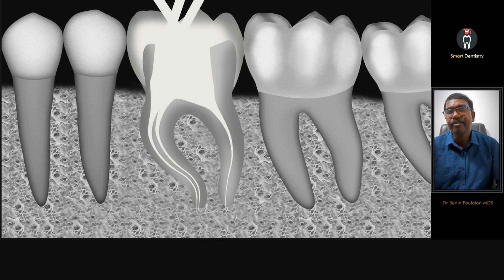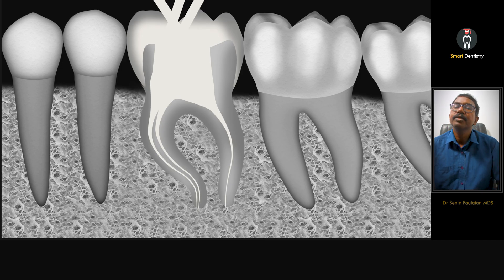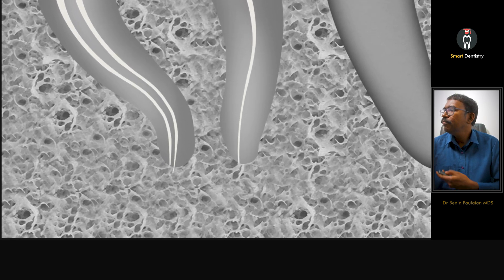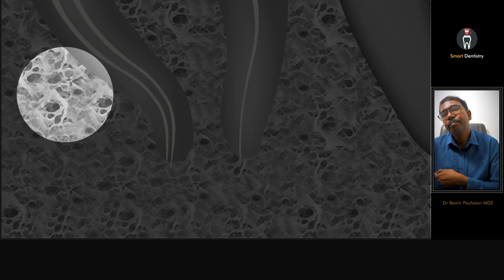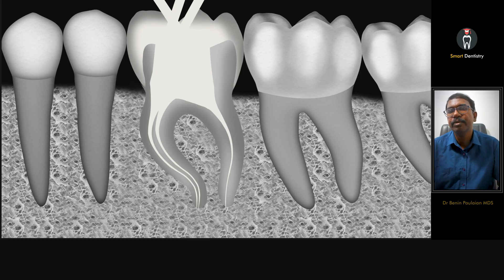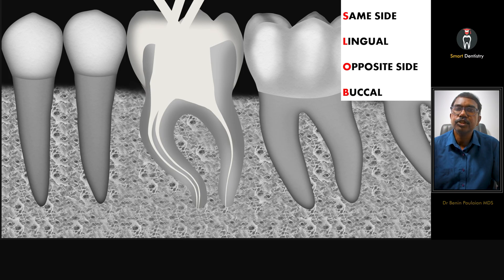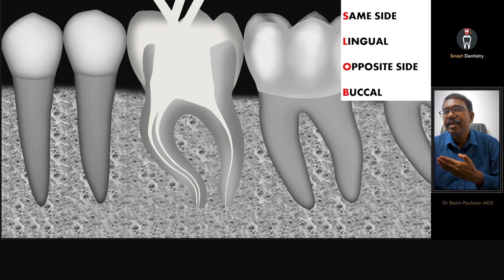If you expose a radiograph in this position, we get a radiograph in which the two canals — the mesio-buccal and the mesio-lingual — will be separated. Now the principle for differentiating the mesio-buccal from the mesio-lingual follows the SLOB rule: Same side Lingual, Opposite side Buccal. With a mesial angulation, whichever canal appears on the mesial side is the lingual canal.